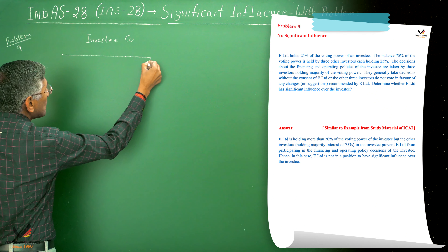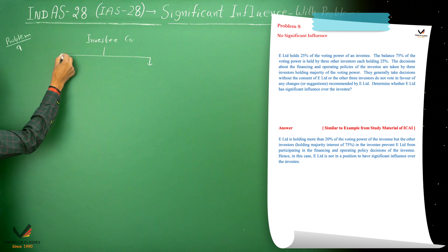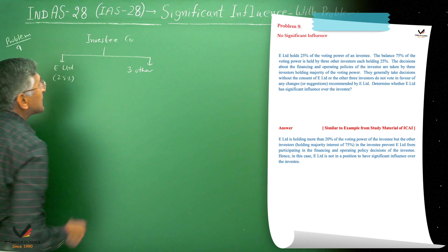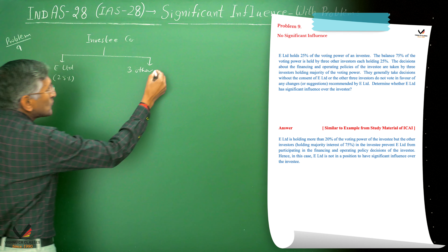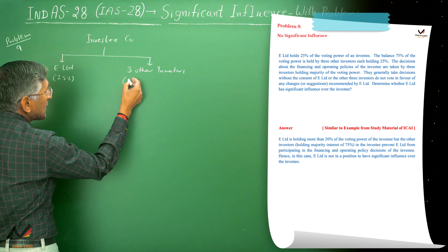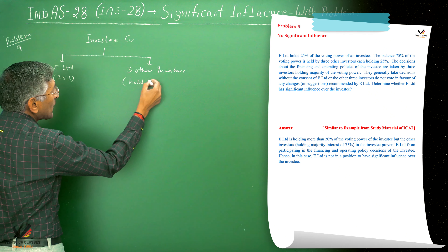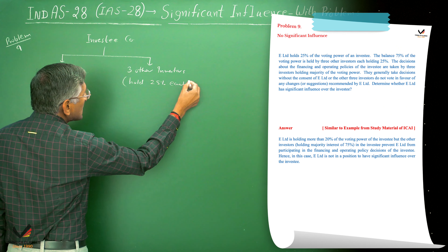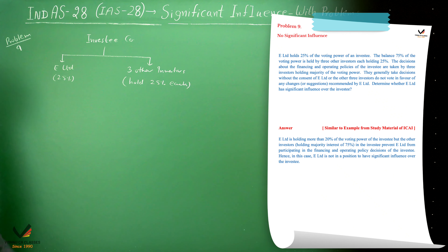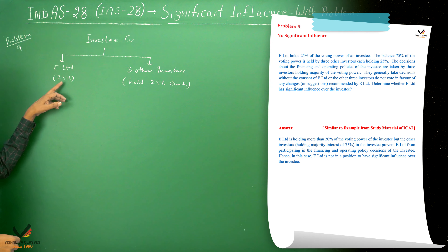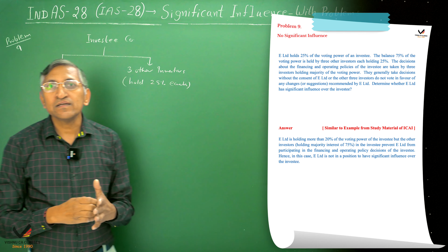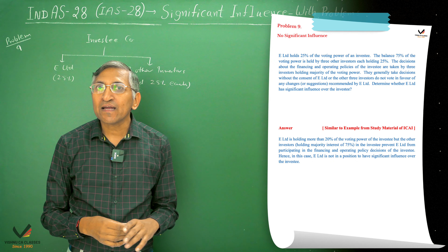There is one investee company, and Illimitally is one investor. Then there are 3 other investors, and they each hold 25% equity of this investee company. Illimitally also has 25% equity. Normally we say that having more than 20% equity means the investor should have significant influence.